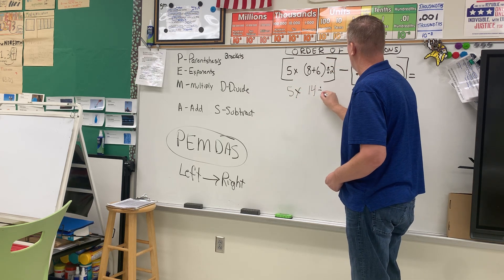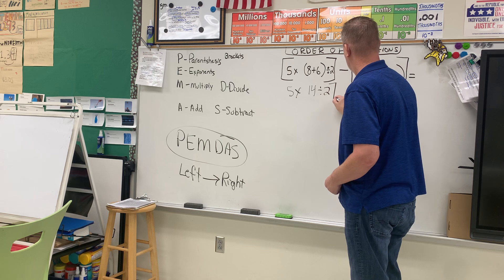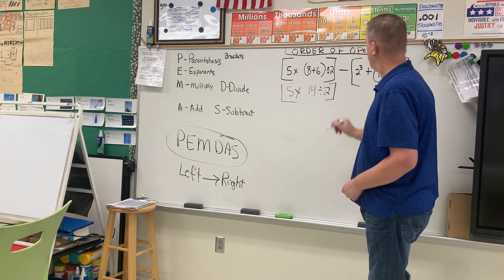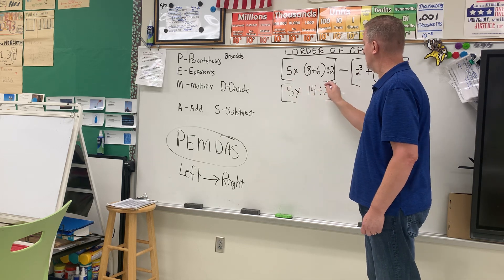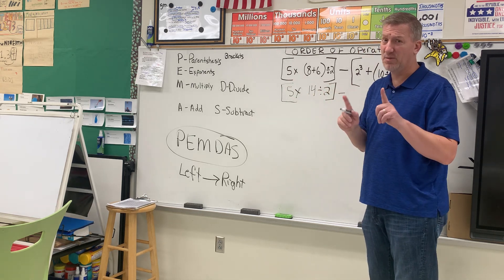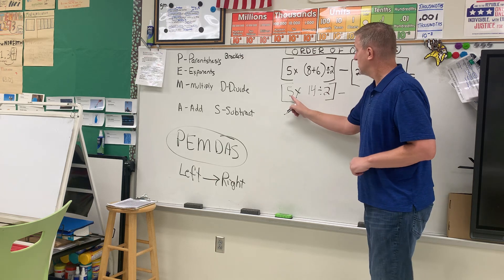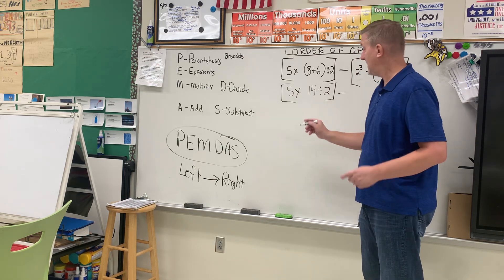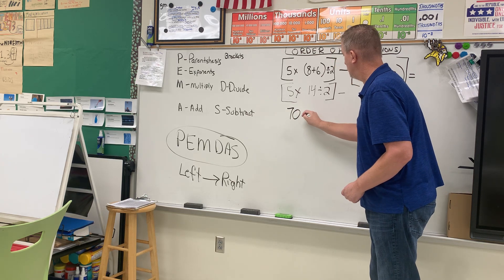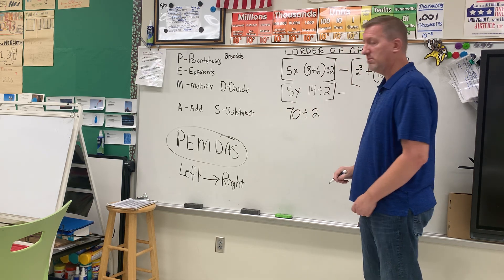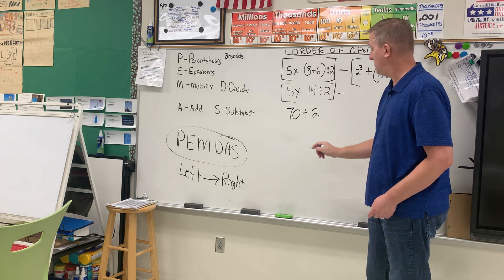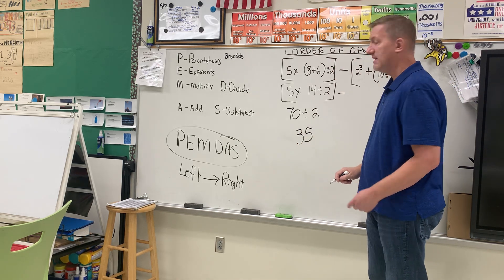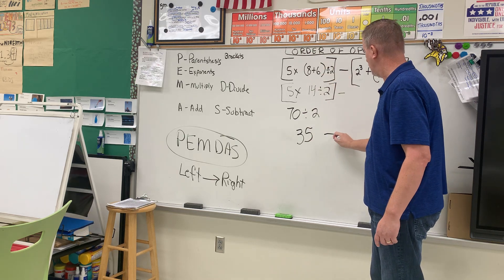So 8 plus 6 is 14. I'm going to write the rest of my equation. These are still the brackets, so I need to do the brackets first. 5 times 14 is 70, divided by 2 — 70 divided by 2 is 35. So I get 35 on this side after solving it. I still have my minus sign here.